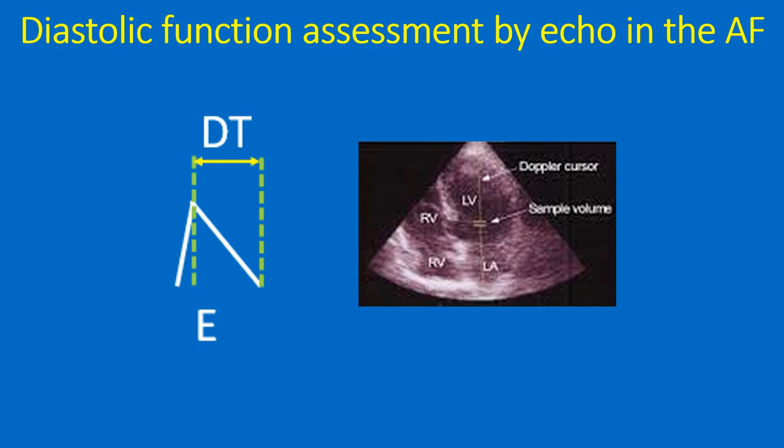Mitral E-wave DT less than 100 ms correlates with a pulmonary wedge pressure of more than 18 mmHg. Deceleration time is the duration between the peak of the E-wave and the upper deceleration slope extrapolated to the baseline, usually measured from the apical 4-chamber view. Pulmonary vein diastolic wave DT is also measured similarly from the right upper pulmonary vein in the apical 4-chamber view.